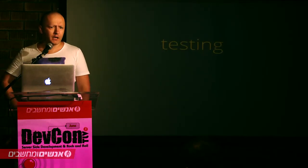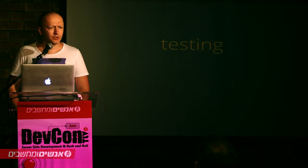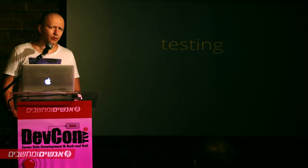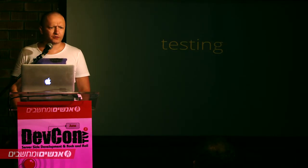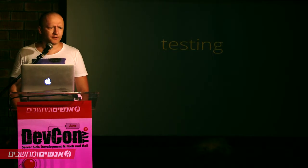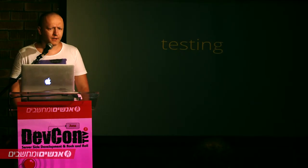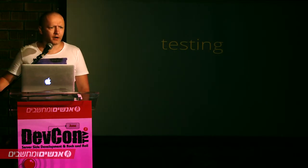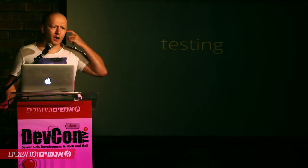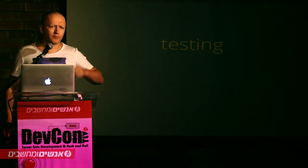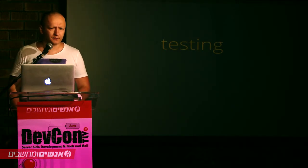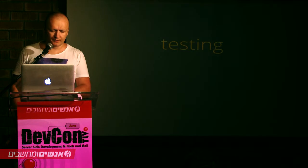Another thing is that most iOS developers do not use automated testing for their applications. There are various reasons for that — while there are testing frameworks, they are not that mature. Most developers simply run the application and start clicking, touching, dragging and doing stuff manually. RubyMotion comes with a setup for automated testing, UI automation, and regression testing, which is very nice.